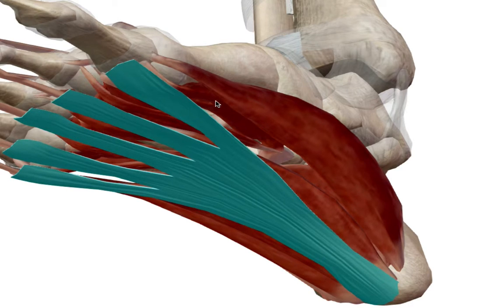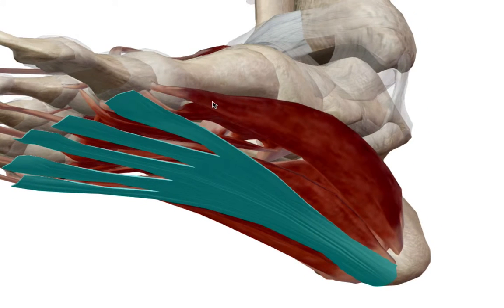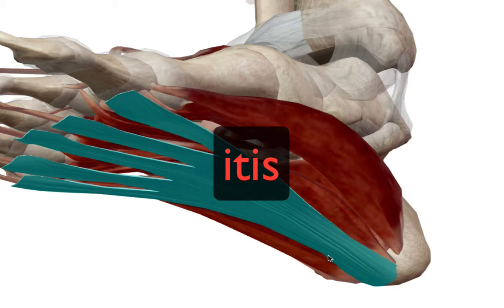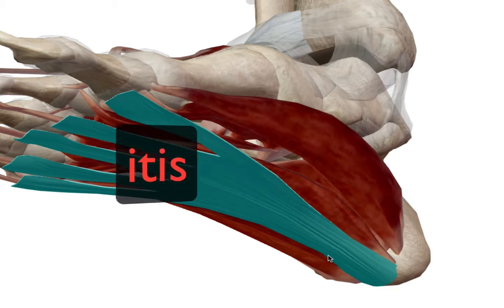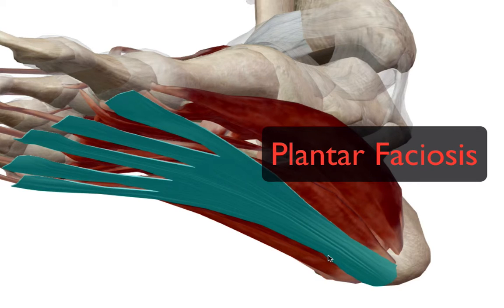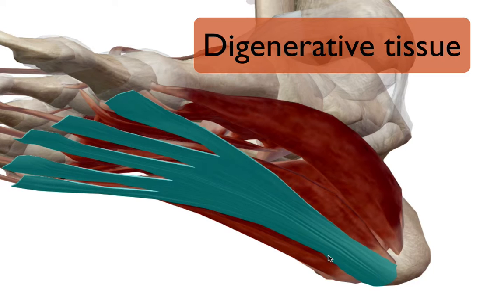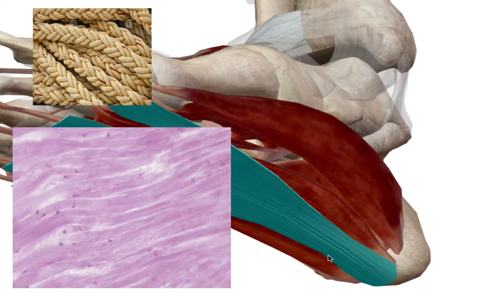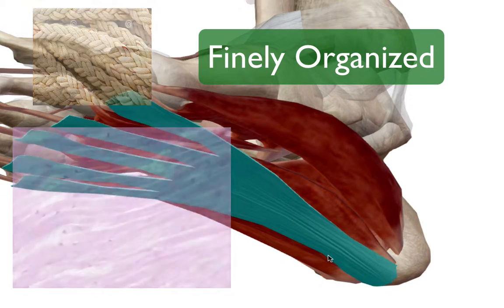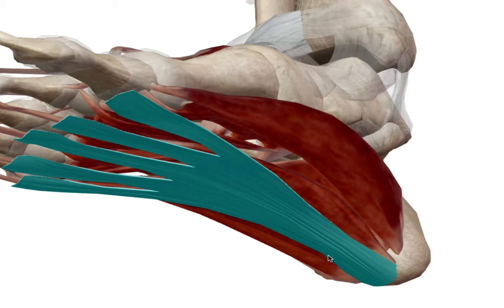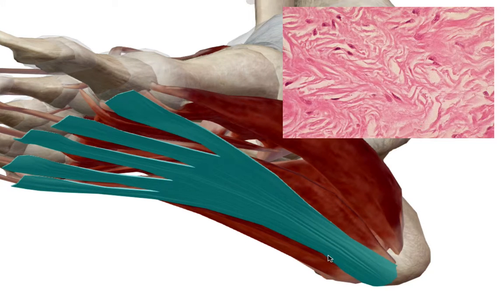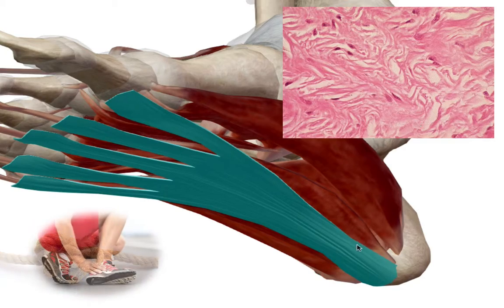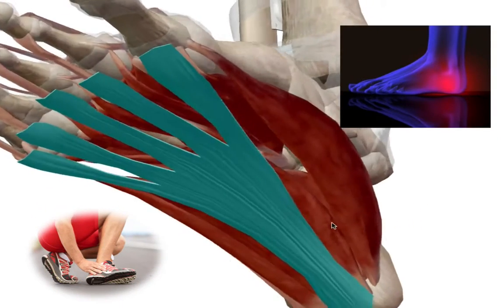Causes include over-stress of the tissue, weak foot muscles like those described, and poor running biomechanics. The term 'plantar fasciitis' suggests inflammation of the tissue, but that's not necessarily what's happening. The more accurate term is 'plantar fasciosis,' which indicates a degenerative tissue issue. Imagine fibers like parallel strands of spaghetti running in the same direction — with fasciosis, these fibers get tangled up like a knotted rope, running in all directions, causing the sharp pain felt at the bottom of the foot.